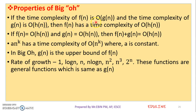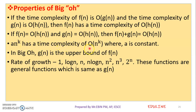Properties of Big O: If the time complexity of f of n is order of g of n, and the time complexity of g of n is order of h of n, then f of n has the time complexity of order of h of n. That is the first property. If f of n equals order of h of n and g of n equals order of h of n, then f of n plus g of n equals order of h of n. Next property: a times n raise to k has the time complexity of order of n raise to k, where a is a constant.